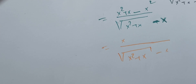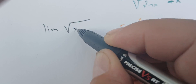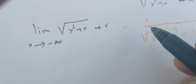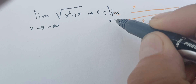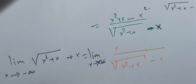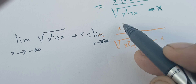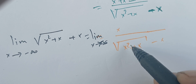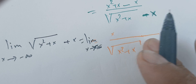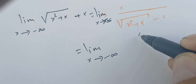So the limit of the square root of x squared plus x as x goes to minus infinity is now this limit: as x goes to minus infinity of that fraction. But if we evaluate, we still get minus infinity plus infinity over plus infinity plus infinity — still indeterminate. So we need to do some more work.